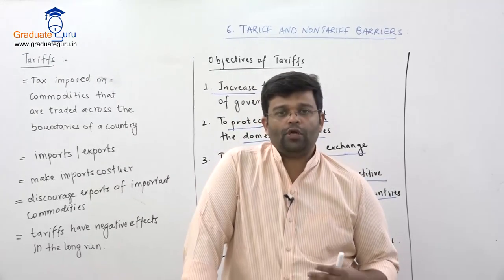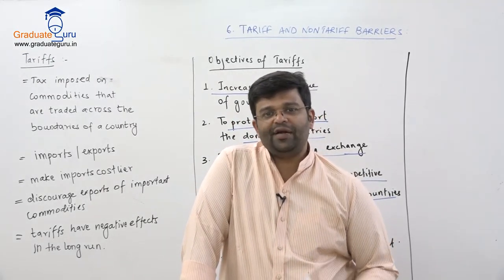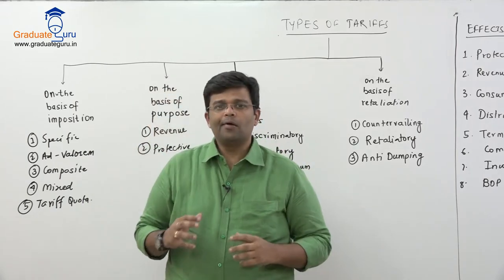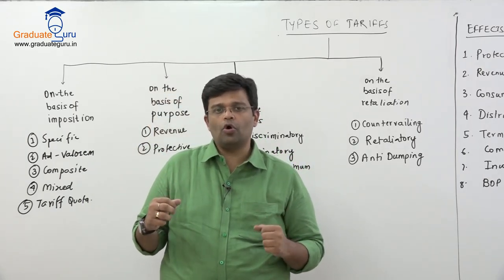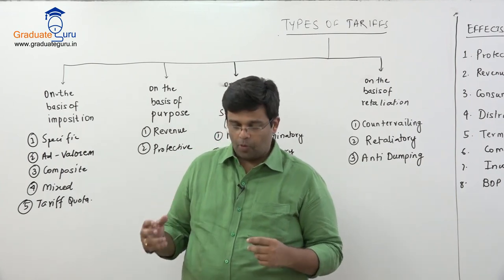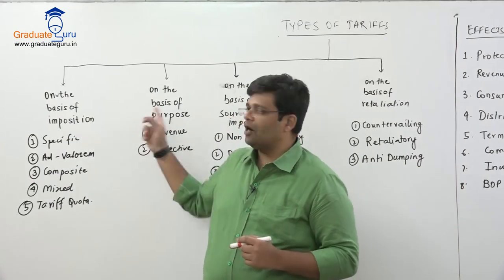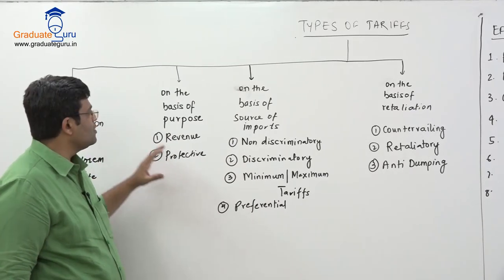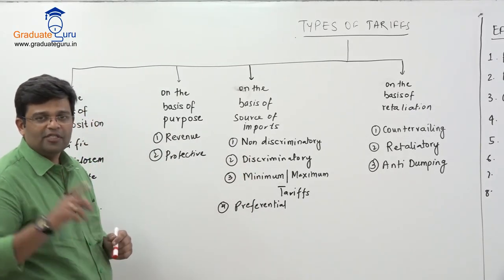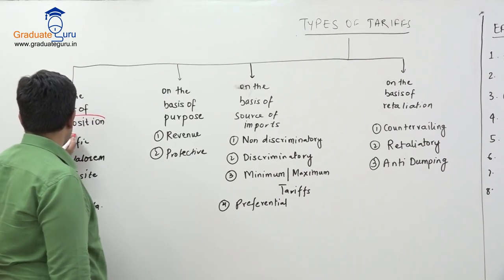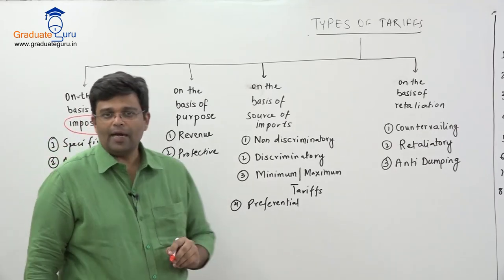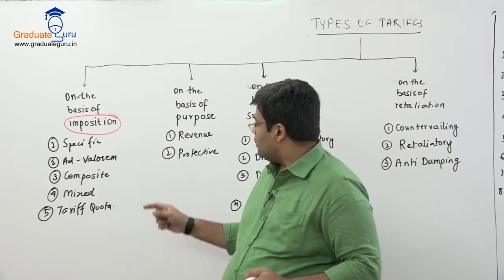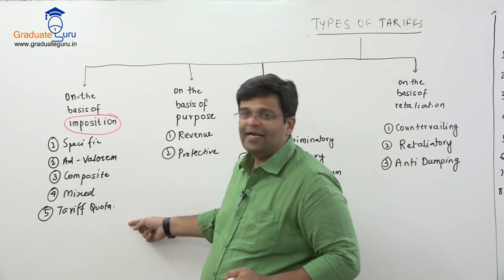Now let us understand the different types of tariffs. We will classify tariffs based on how they are imposed. The first classification is on the basis of imposition. There are five types: specific, ad valorem, composite, mixed, and tariff quota.